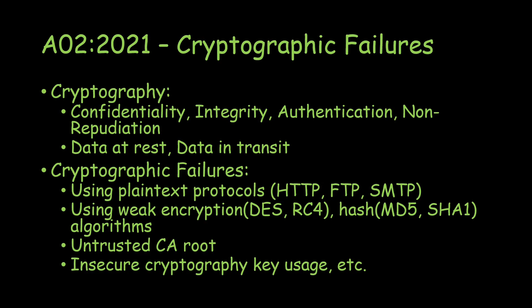Cryptographic failures occur due to multiple reasons. First, using plain text protocols such as HTTP, FTP, and SMTP — these protocols are used without an SSL connection. Whatever data goes in transit over these protocols can be intercepted by a network capture tool by anyone who has access to the network, allowing them to analyze the data in plain text. That's why we use HTTPS instead.